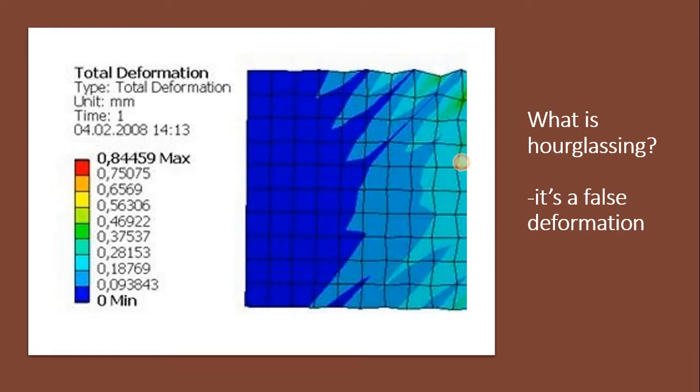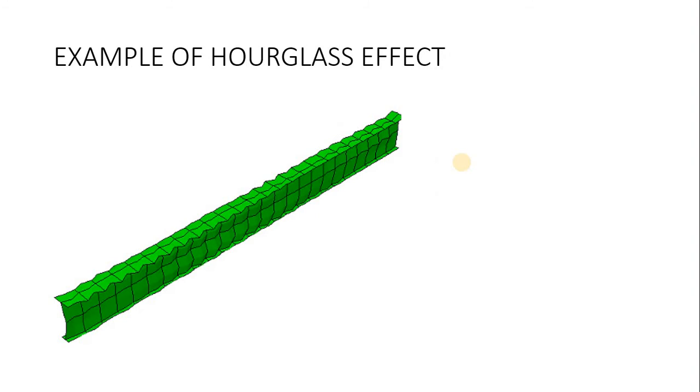Moving on to the next segment, which is example of hourglass effect. As you can see, this is an example of hourglass effects. This is a bar or column, whatever you call it. You can clearly see the zigzag effect on this example.